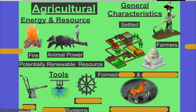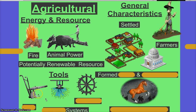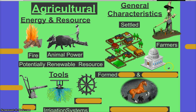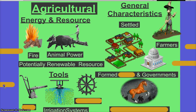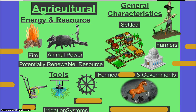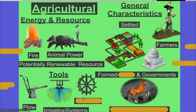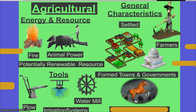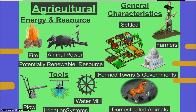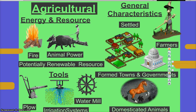The key word to describe agricultural society: farmers — good. We settled to farm, to grow food. What tools would farmers utilize? Irrigation systems — good. They formed governments. The agricultural society is actually defined by the invention of the plow, and they used animals to move the plow, so they got more land tilled. They also had water mills, formed towns, which led to government because they needed structure.